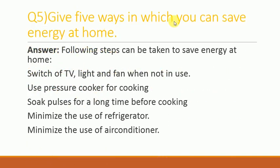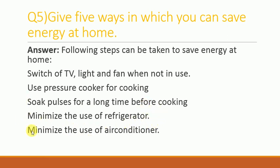Give five ways in which you can save energy at home. The following steps can be taken: Switch off TV, light, and fan when not in use. Use a pressure cooker for cooking. Soak pulses for a long time before cooking. Minimize the use of refrigerator. Minimize the use of air conditioner.